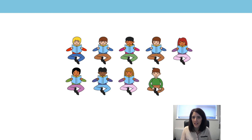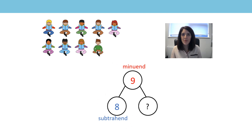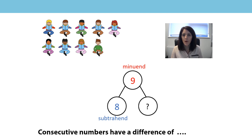Let's have a look at a new maths story. There are nine children here, and eight of them are reading. How many children are not reading? Before we start calculating, let's look at the numbers. The nine is the minuend and it represents the nine children that are there. The eight is the subtrahend and it represents the eight children who are reading. Look carefully at those numbers — they're consecutive numbers. Eight and nine are consecutive numbers; they're next to each other on the number line.